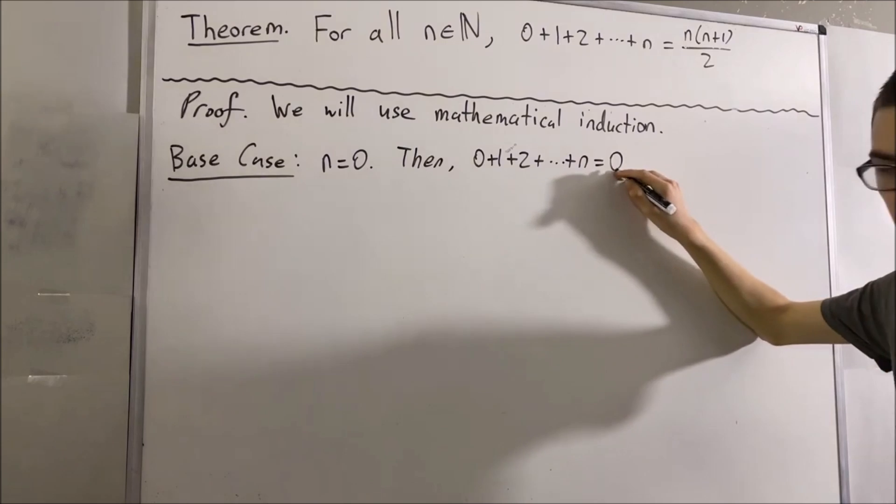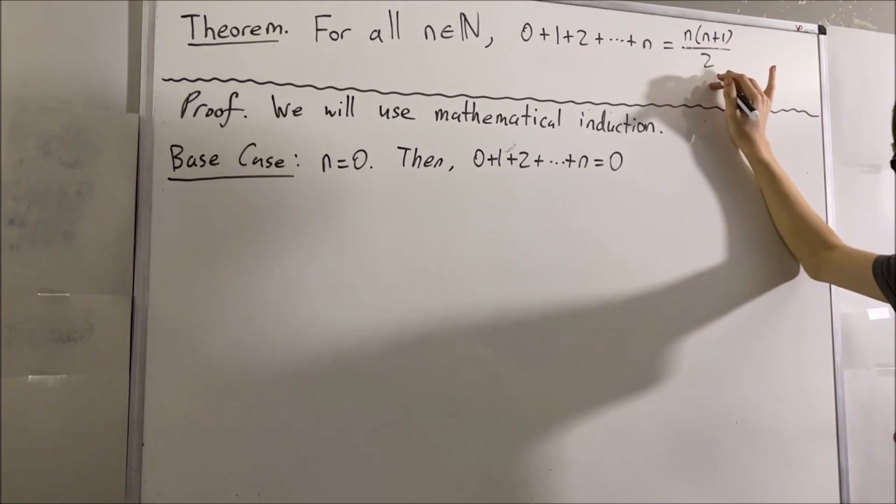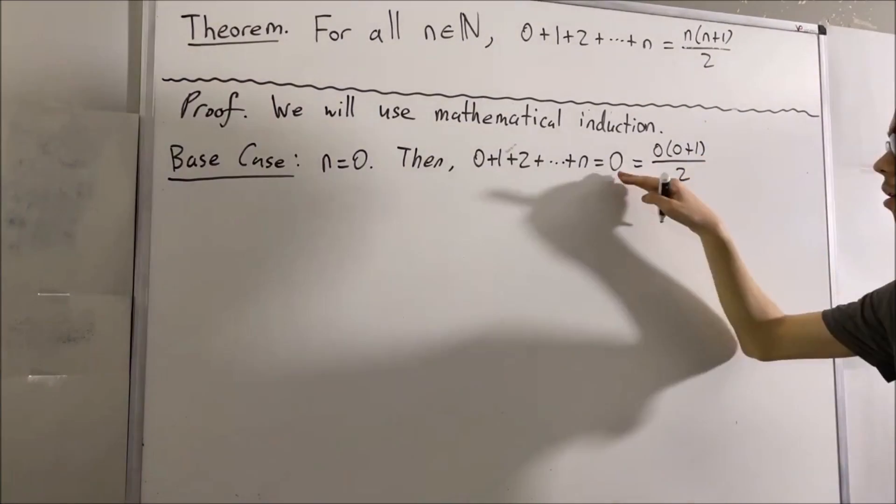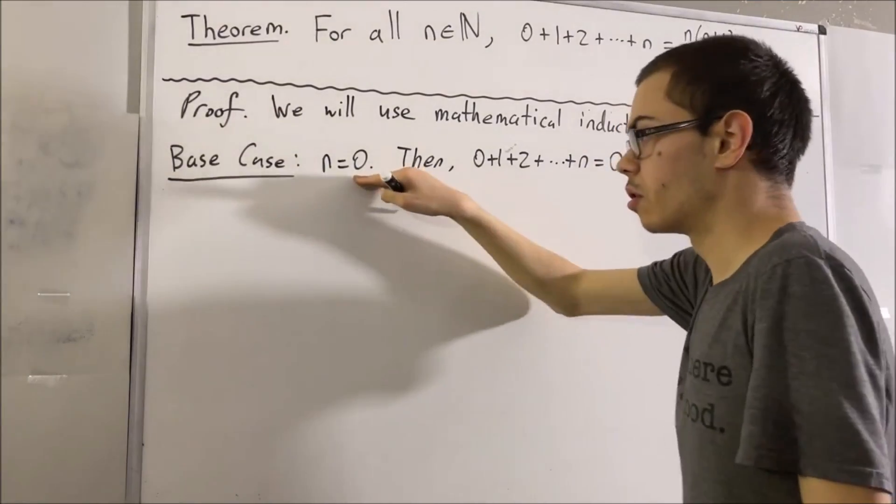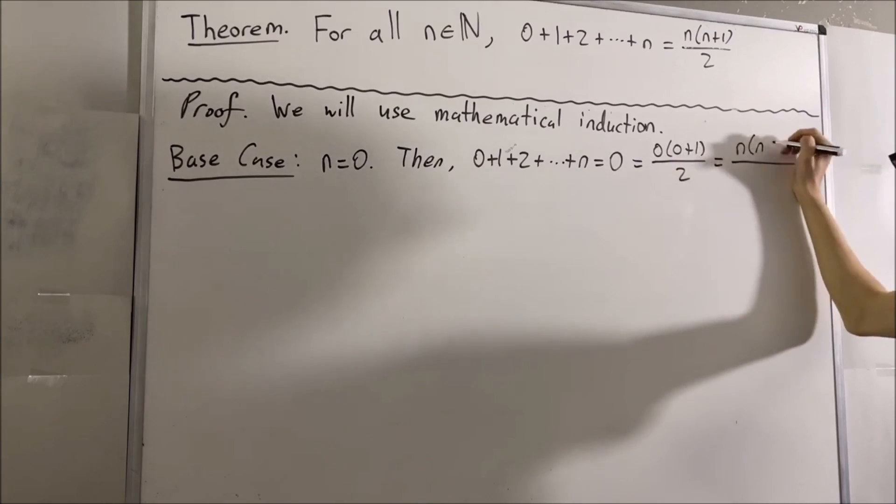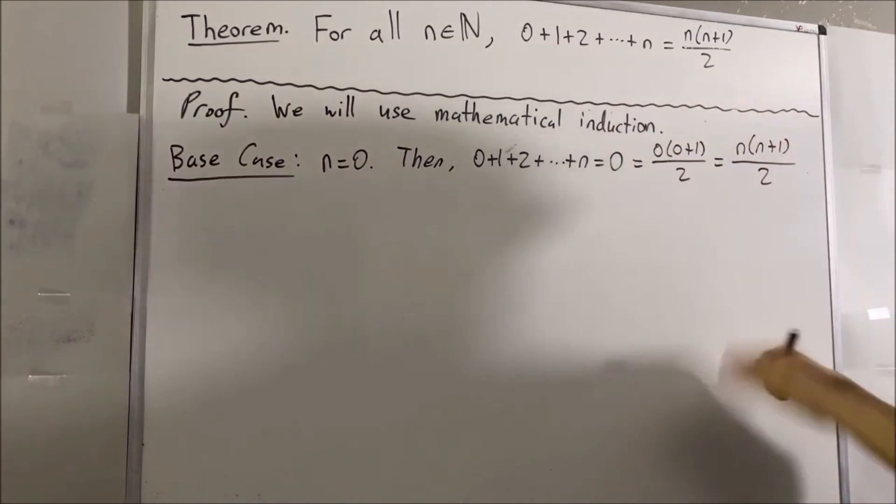But 0 is really just equal to 0 times 0 plus 1 over 2. It's pretty easy to check that this fraction is equal to 0. But since n is equal to 0, we can just replace these 0s with n.